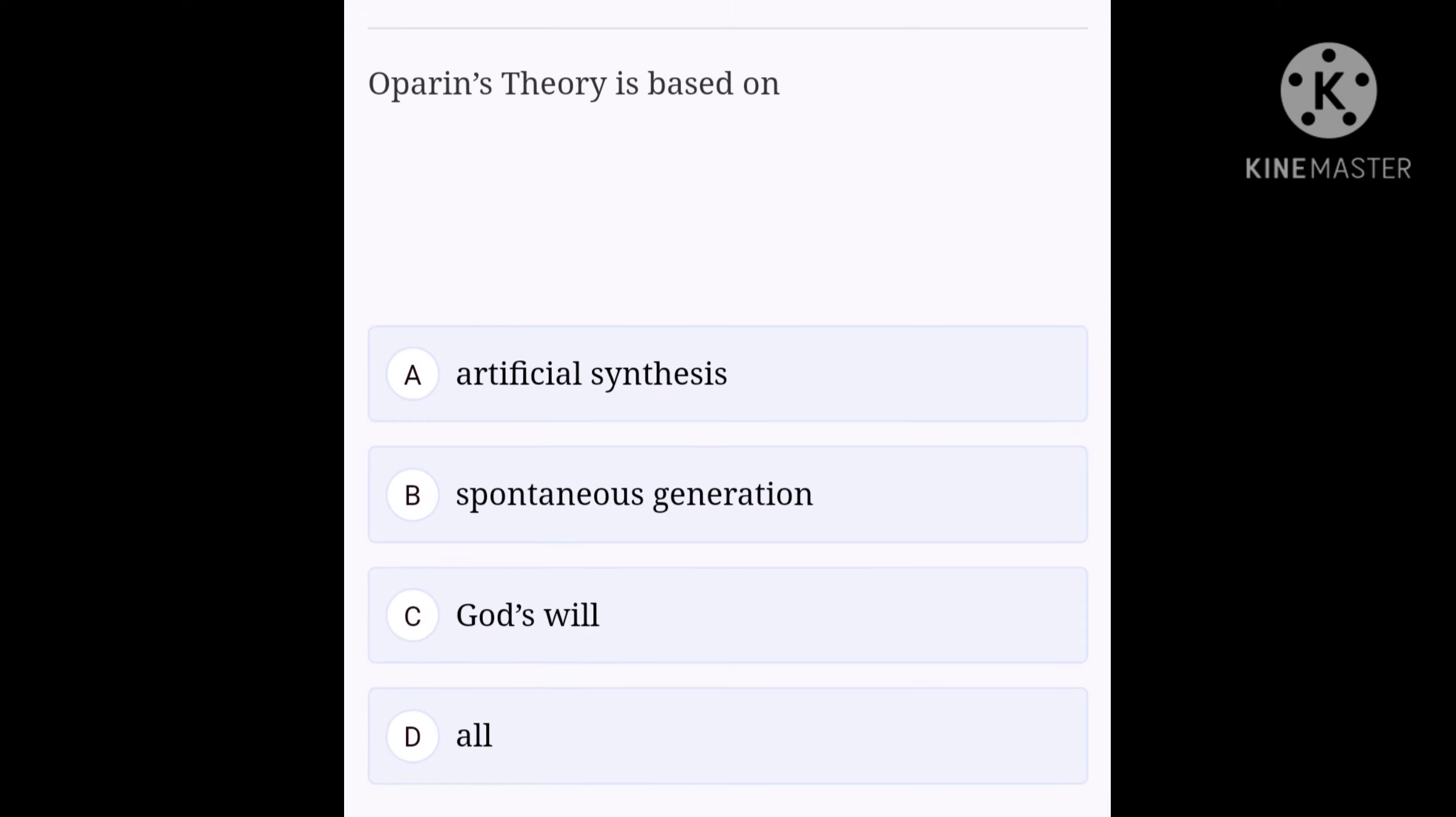Let's see our next question. Oparin's theory is based on option A: artificial synthesis, option B: spontaneous generation, option C: God's will, option D: all. And the right answer for this question is A, artificial synthesis.